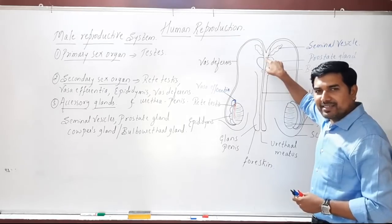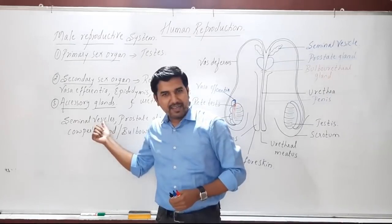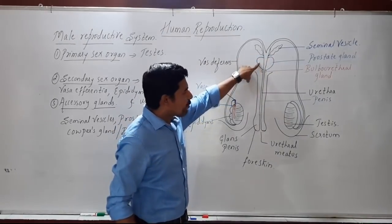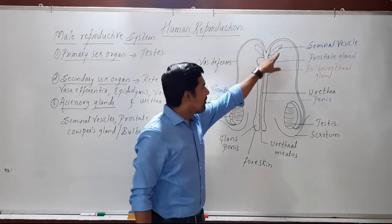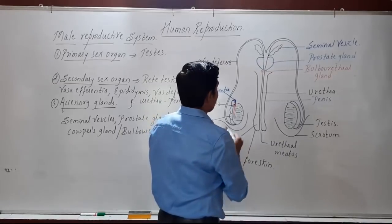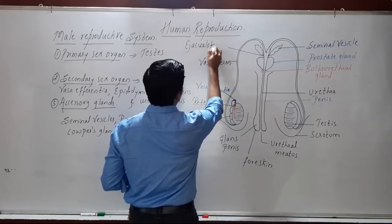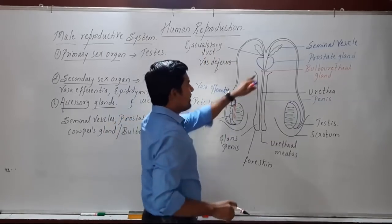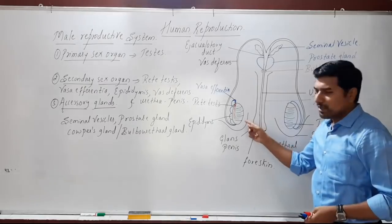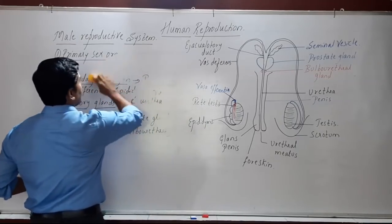The vas deferens joins the urethra at a region called the ejaculatory duct. There are three accessory glands: a pair of seminal vesicles, the prostate gland, and the bulbourethral gland. When the seminal vesicles join the urethra, they form the ejaculatory duct, through which semen is ejected. Now let's study the primary sex organ — the testis — in terms of its structure and function.